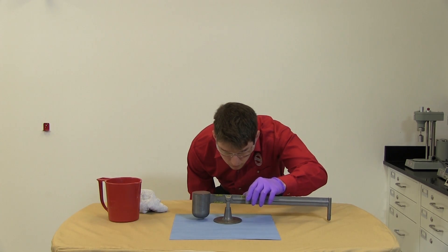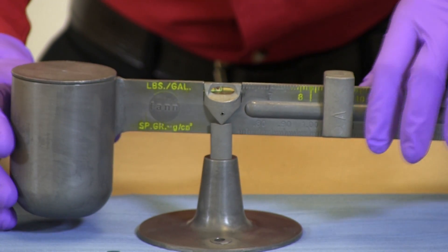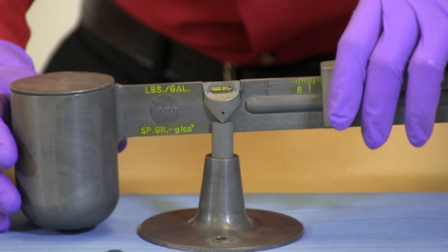Read the mud weight from the scale. There are four scales on the mud balance, two on the front and two on the rear.